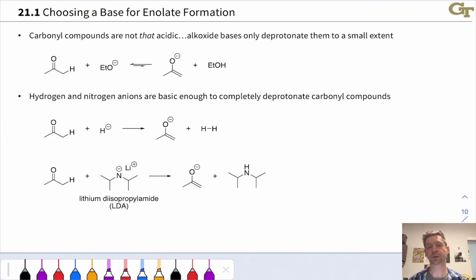When it comes to generating an enolate from a neutral carbonyl compound, what we need is a Bronsted base, something to pluck a proton off of the alpha position. And there are two general classes of bases that you'll see used for this purpose: reversible and irreversible bases.